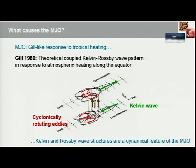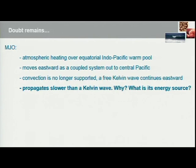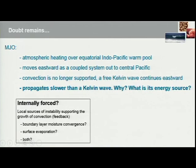We often see tropical cyclones develop in association with the MJO, particularly over the eastern Indian and western Pacific oceans. The MJO is characterised by atmospheric heating over the equatorial Indo-Pacific warm pool. It moves eastward as a coupled system out to the central Pacific, where convection is no longer supported. Beyond that point, we see a free Kelvin wave propagate to the east, breaking away from the convective envelope, while Rossby waves shoot off to the west. But the MJO propagates slower than a Kelvin wave — the question is why, and what is the energy source. Doubt remains, and this is still an area of active research.